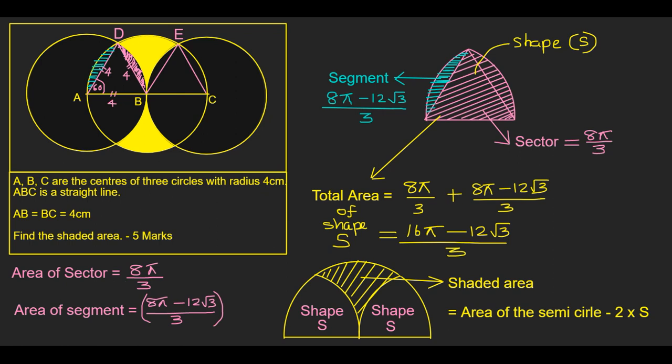So the area of the sector is 8 pi over 3. Area of the segment is 8 pi minus 12 root 3 over 3. Now if you come back to the object here, we're talking about a shape S. That shape S is made by a sector, which is 8 pi over 3, and a segment, which is the green color one, which is 8 pi minus 12 root 3 over 3. So the total area of the shape S equals 8 pi over 3 plus 8 pi minus 12 root 3 over 3. The bottom denominator is the same, so if you add 8 pi with 8 pi, you get 16 pi minus 12 root 3.